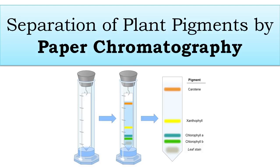Hello everyone, welcome to Class 11 Biology. In this video we are going to discuss the separation of plant pigments by paper chromatography. This is one of your biology practicals, based on the chapter on photosynthesis in higher plants. There are different types of plant pigments available in a mixture form. The pigments include chlorophyll A, chlorophyll B, xanthophyll, and carotenoids. The method used is paper chromatography.